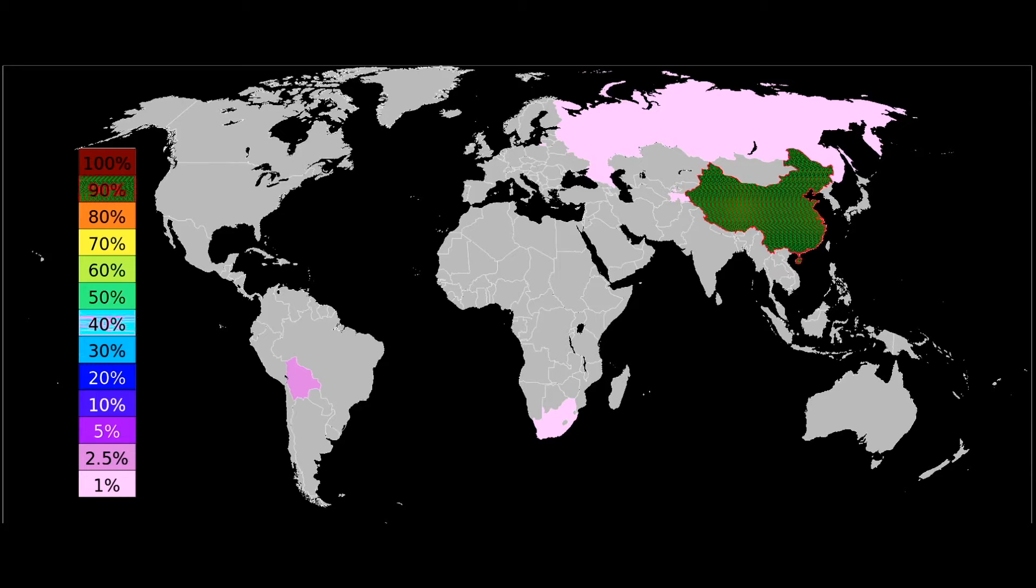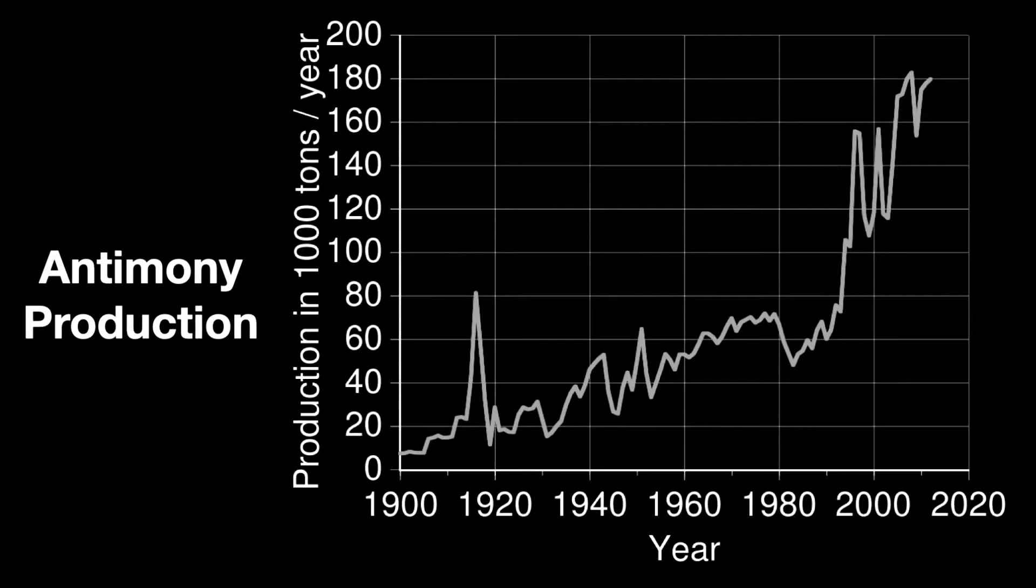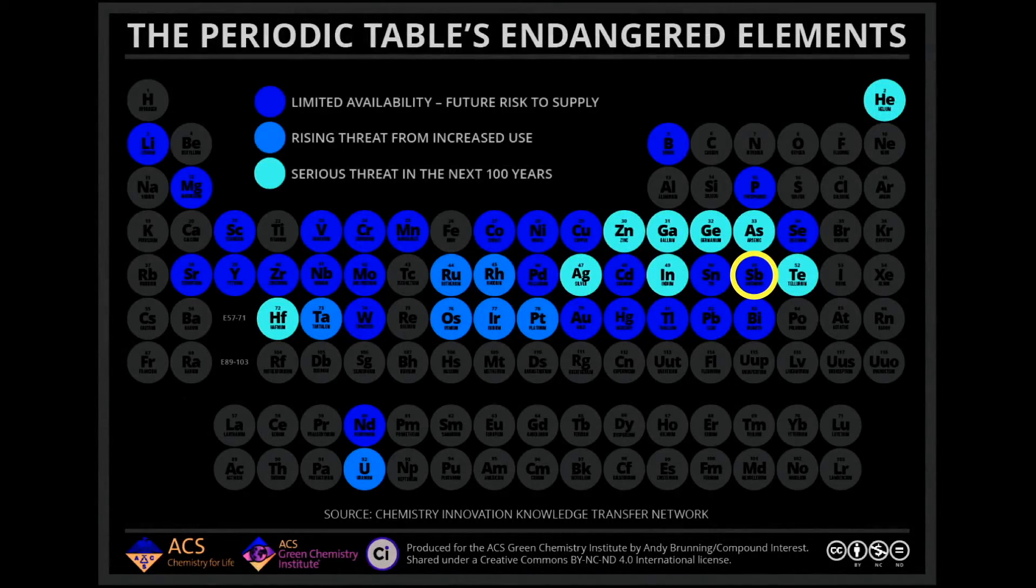It's pretty obvious from this map that China is a major producer of antimony. The main suppliers of antimony are China, producing 77% of the antimony in the world, followed by Russia with 7%, then Tajikistan, Bolivia, Australia, and others. In the U.S., we import 84% of the antimony we need. The rest we get from recycling. We have no antimony mining. Since 1900, production of antimony worldwide has increased from under 10,000 tons per year to about 180,000 tons per year in 2010. The American Chemical Society's endangered element list places antimony as limited availability, future risk to supply. So we should watch our use of this element and be sure to recycle it.